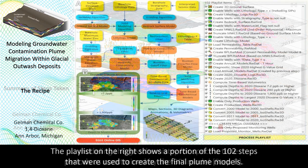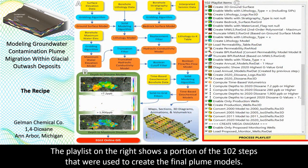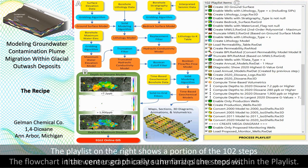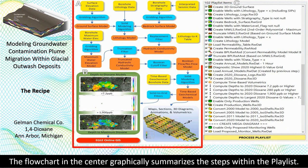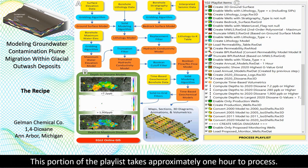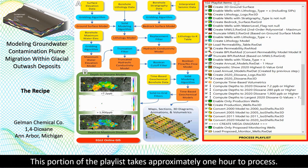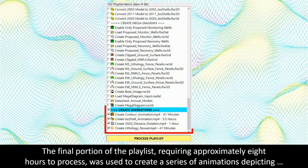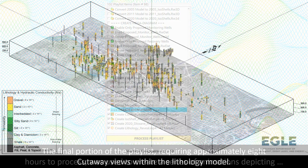The playlist on the right shows a portion of the 102 steps that were used to create the final plume model. The flowchart in the center graphically summarizes the steps within the playlist. This portion of the playlist takes approximately one hour to process. The final portion of the playlist, requiring approximately eight hours to process, was used to create a series of animations depicting cutaway views within the lithology model.